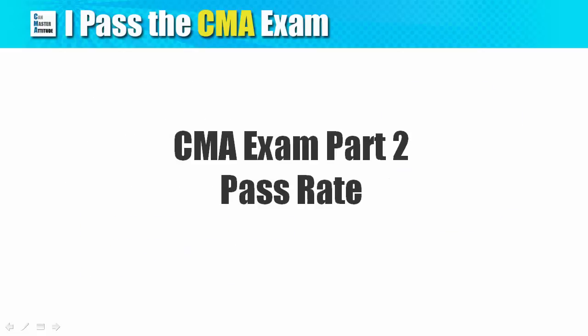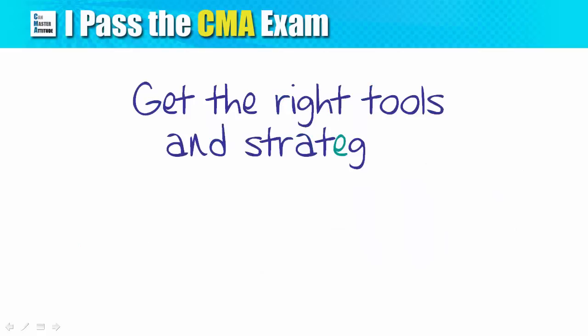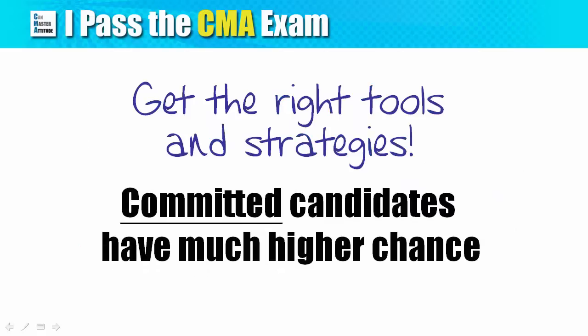The historical pass rate of Part 2 is around 42%. While it is higher than that in Part 1, it is hard to pinpoint the reason. Since most candidates seem to take Part 1 before Part 2, they are typically more prepared when they reach the second part of the exam. If you are committed to the exam, pick the right review course and study using an effective strategy — your chance of passing is a lot higher.